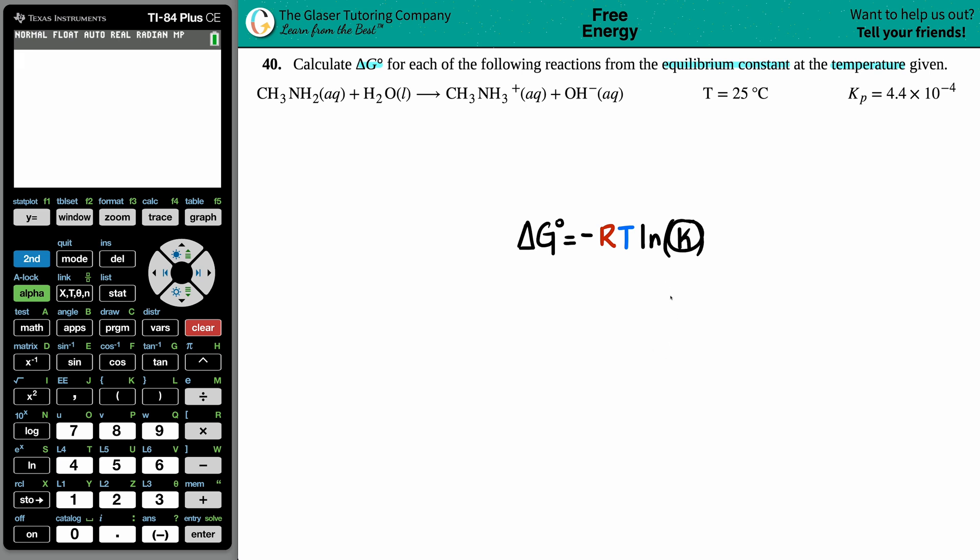Here is your equilibrium constant. Now, I didn't specifically write down what K to use because you could use any one of them. There's so many: KAs, KBs, KC, KEQ, KP, KSP.